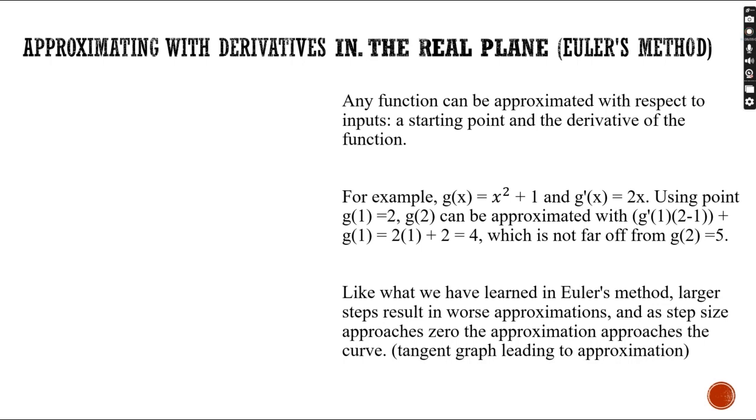So let's start with approximating with derivatives in the real plane, using Euler's method. Any function can be approximated with respect to inputs, a starting point, and the derivative of the function. For example, let's use an example function x squared plus 1. Its derivative would be 2x. Using the starting point 1, 2, g of 2 can be approximated with a step size of 1, and using the tangent line approximation, we would get 4, which is not far off from g of 2 equals 5, which is the real value.